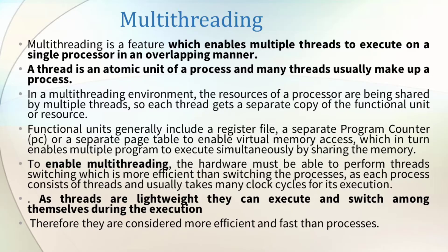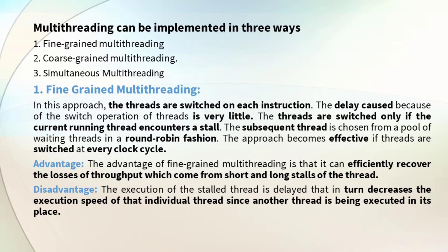In multi-threading, we must be able to perform thread switching, which is more efficient than switching processes. As threads are lightweight, they can be executed and switched among themselves during execution. Multi-threading occurs in three ways: fine-grained multi-threading, coarse-grained multi-threading, and simultaneous multi-threading.